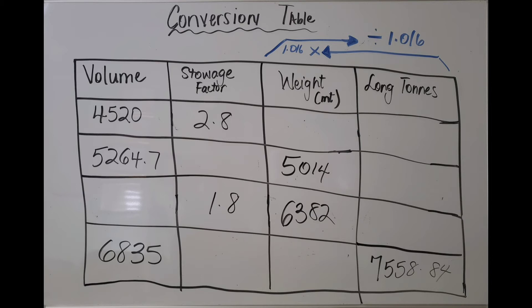The writing in blue shows the conversion factor for weight and long tons is 1.016. If you have the long ton and you need to find the weight, you multiply by 1.016.